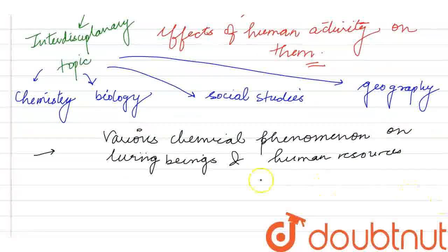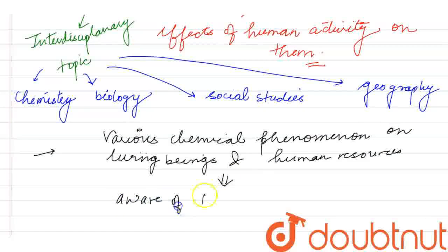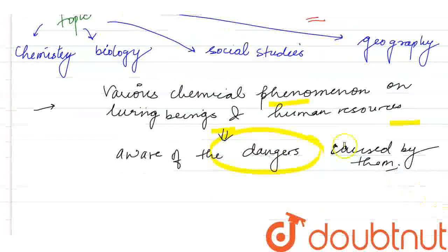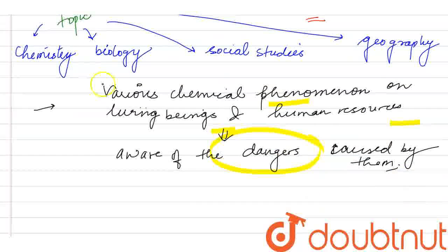We should be aware of the dangers caused by them. So this is our social relevance - we need to know what are the processes on human beings and other resources, what are the dangers, and how we can effectively treat them. We should know the remedies.